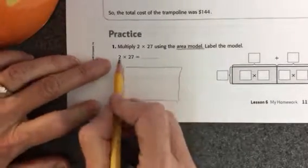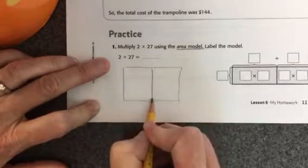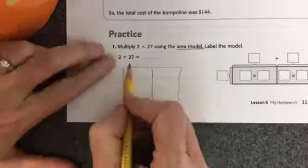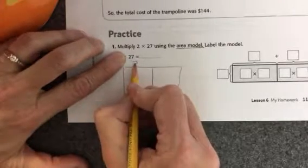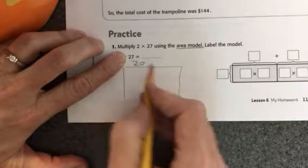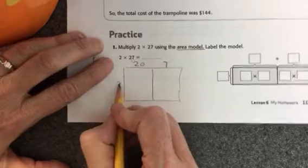I'm going to do 2 times 27. This is just one digit, but 27 is two digits, so I will split my box into two pieces. The value of the 2 in 27 is 20, and the value of the 7 in 27 is 7.